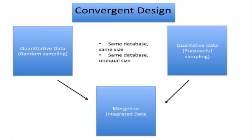Taking these basic ideas on sampling, let's turn to the three basic designs. First, a convergent design. In this convergent design, we're collecting both quantitative data and qualitative data at roughly the same time, and then we're going to merge or integrate the two databases. This design raises some interesting sampling questions.